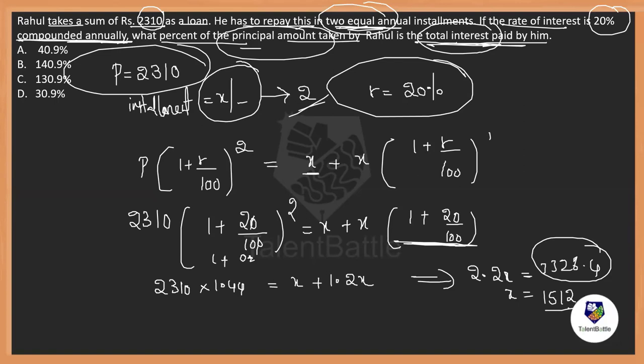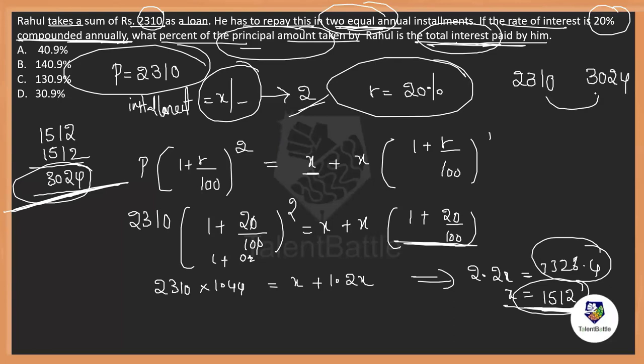2,310 into 1.44 equals to 2.2x will be equals to 3,326.4. So, value of x will be equal to divided by 2.2. This if I divide by 2.2, I will get value of x which is 1,512. So, 1,512 rupees is his installments that he is going to pay. So, actually I took 2,310 rupees but now I am paying 3,024 rupees.